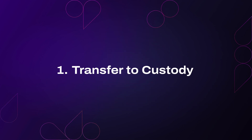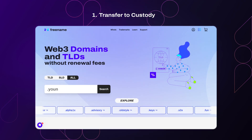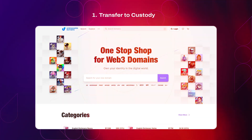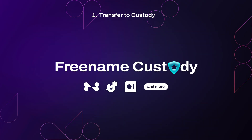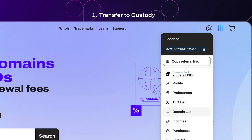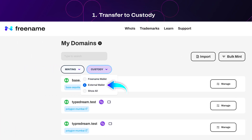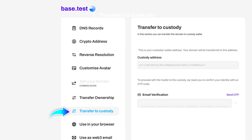Let's get started. Step 1: Transfer your domain to Freename Custody. Whether your domain was purchased on Freename or other platforms, you can transfer it to Freename Custody if it's purchased on one of the supported namespaces. We are always working to add more namespaces, so check the updated list in the description. To start, head over to your domain list under External Wallets, click Manage, then Transfer to Custody, and Confirm.